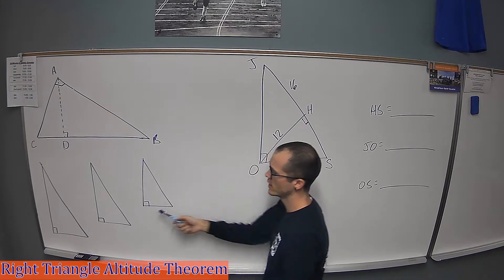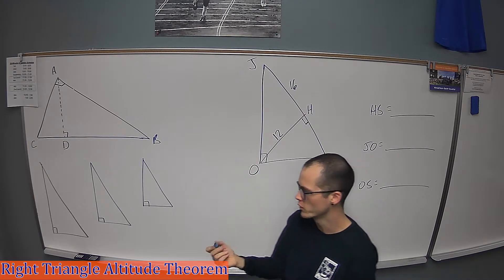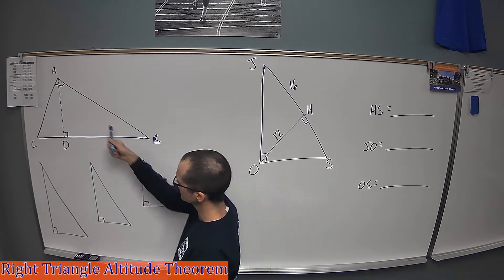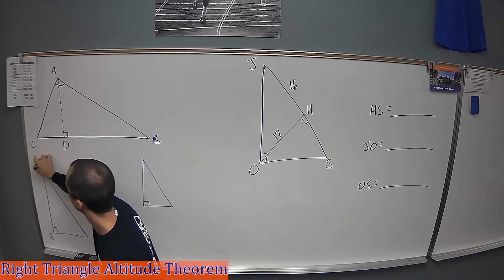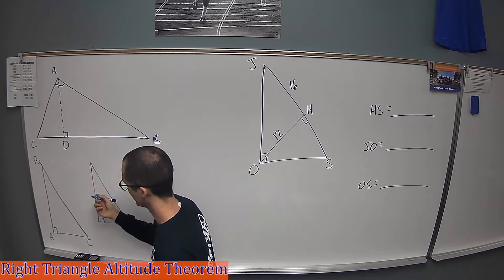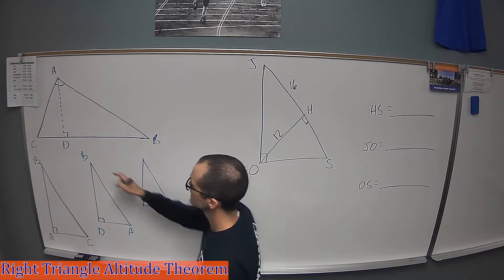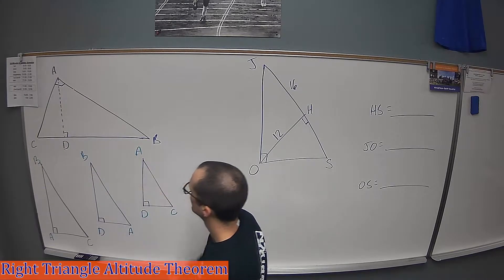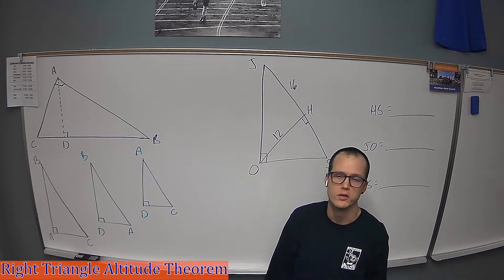We have the big one, the medium-sized one DAB, and the smaller one ADC. I've drawn out three right triangles separately to work with them individually. The key is to write the letters at the correct vertices. For the big triangle, the right angle is at A, the long leg goes to B, the short leg to C. For the medium, the right angle is at D, long leg to B, short leg to A. For the small one, the right angle is at D, short leg to C, long leg to A.